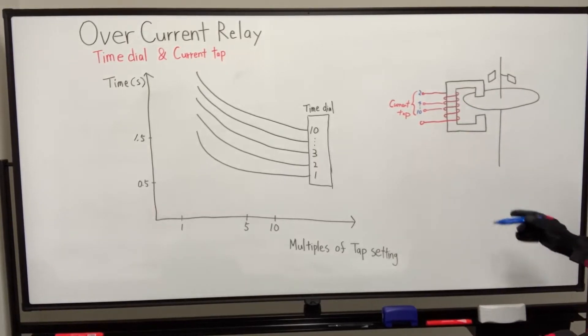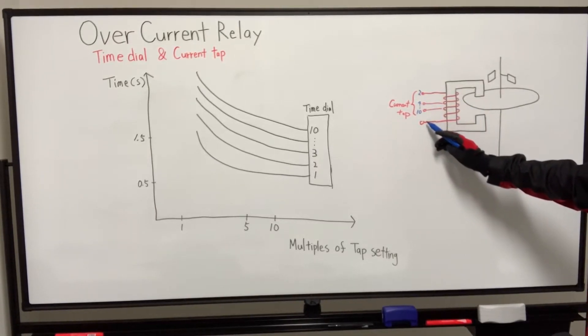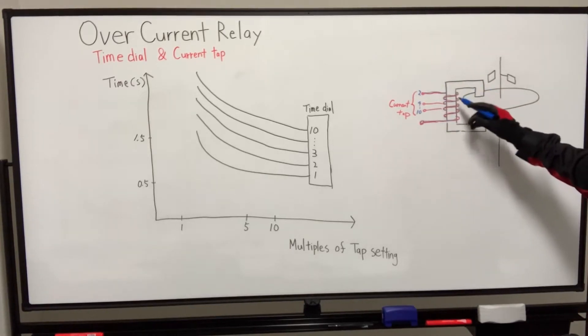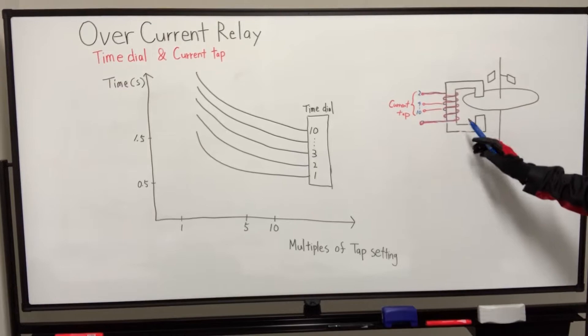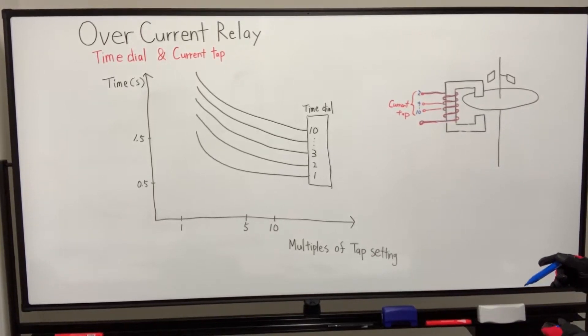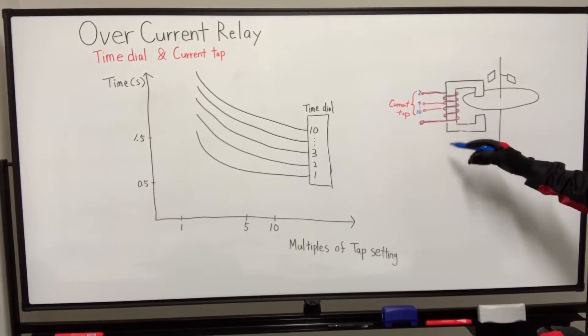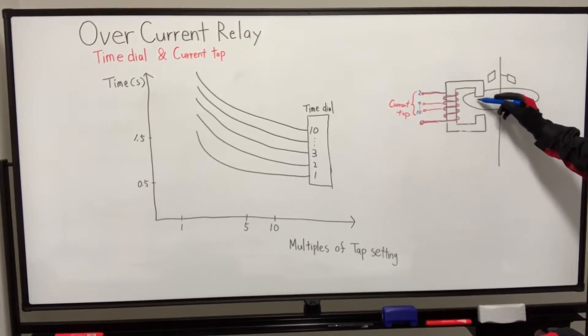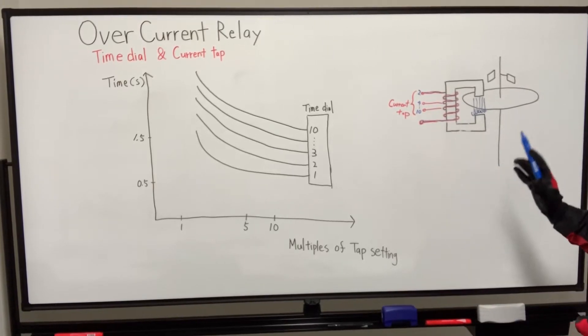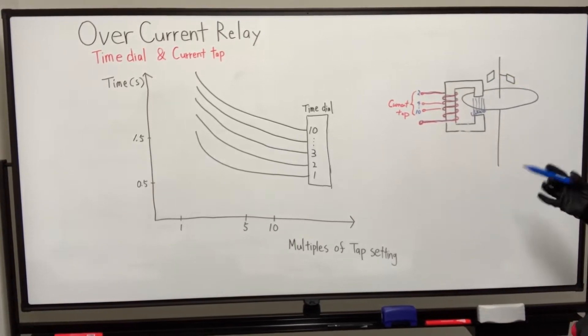So if a current tap is set to number 2, the fixed contact is here, and number 2 is from here. The coil which is energized by fault current is relatively long. So the longer coil creates a stronger magnetic field. That means the disk rotates powerfully, and the contact will close quickly.